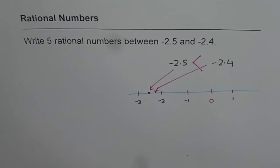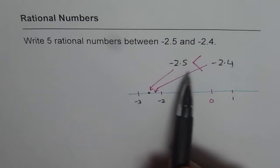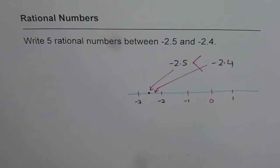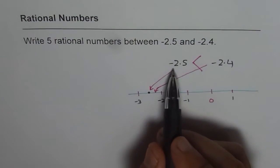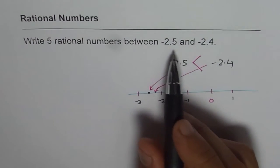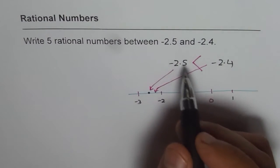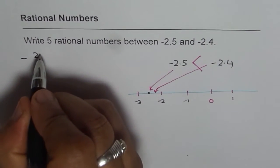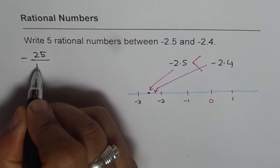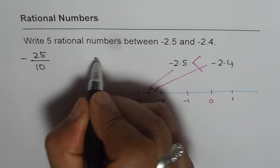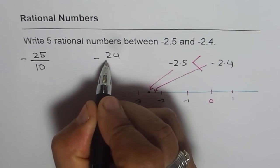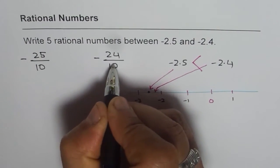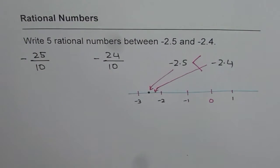Now, the question is, we have to write 5 rational numbers between these 2 numbers. How do you write them? Let me first write both of them as rational numbers. We could write them as minus 25 over 10 and minus 24 over 10. That is how we can write them.